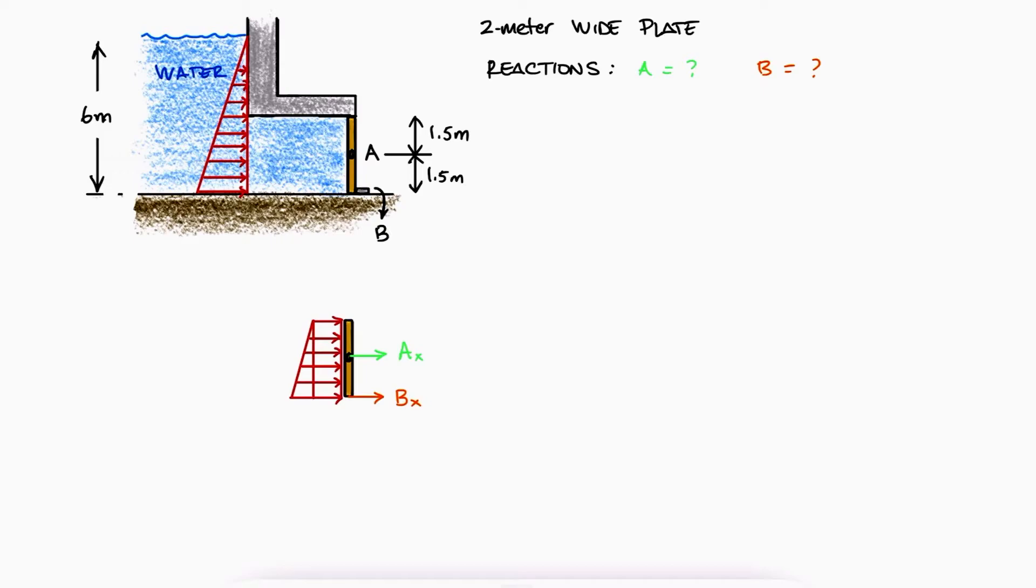Since the trapezoid can be analyzed as a rectangle plus a triangle, we write the equivalent load for the trapezoidal distributed load as two forces, one from the triangle located at one-third of the height of the gate from the bottom and the equivalent load from the rectangle found at the center of the gate.